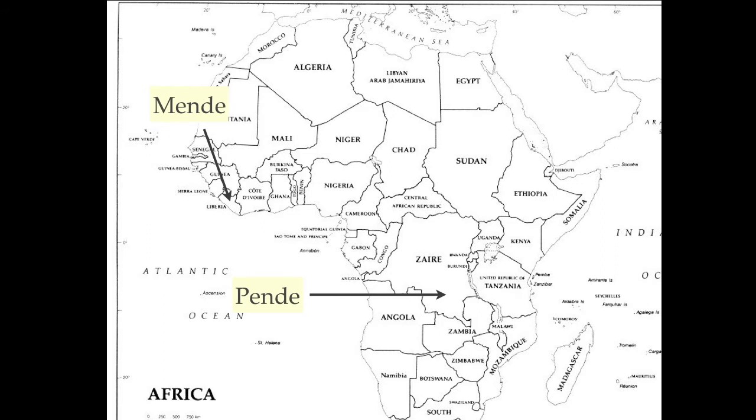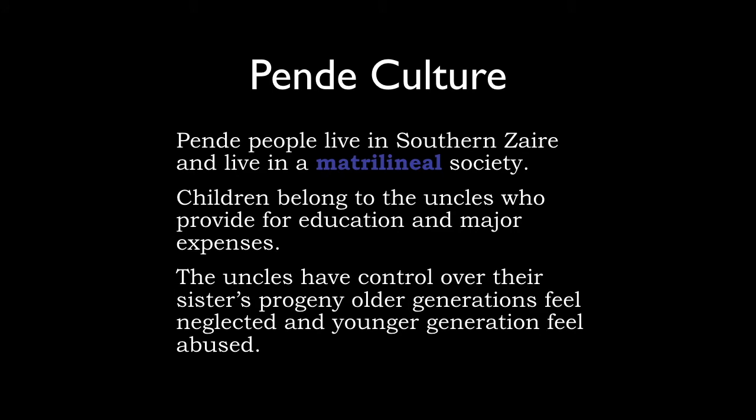We're going to look at two cultures: the Pende, in the southern part of Zaire, and the Mende, in part of Liberia and further to the north. We'll start with the Western Pende, a matrilineal society. A matrilineal society is very different from what we have in the United States as a patrilineal society, where commonly a person adopts the name of the father. In a matrilineal society, a person adopts the name and is recognized as part of the genealogical family of the mother.